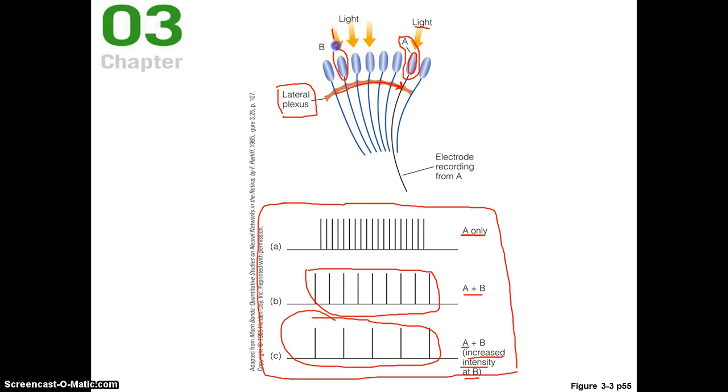That's why A slows down when you stimulate B. And as you increase the intensity of the stimulation to B, you're increasing the amount of the lateral inhibition traveling over here to A, and so you're even further decreasing the activity of cell A.